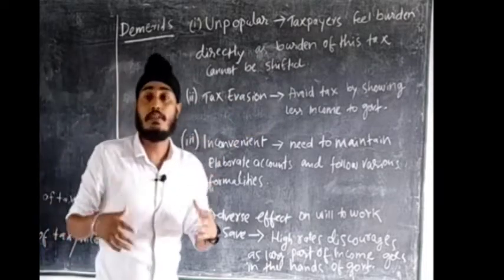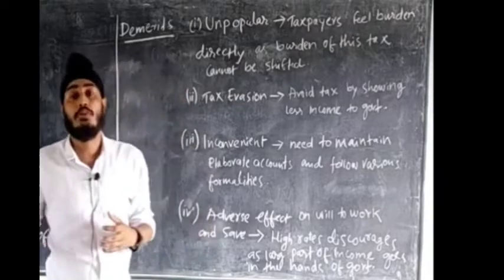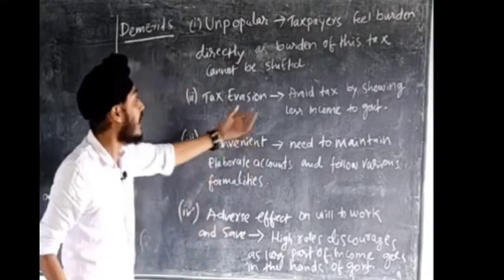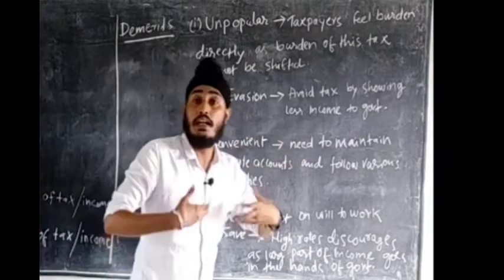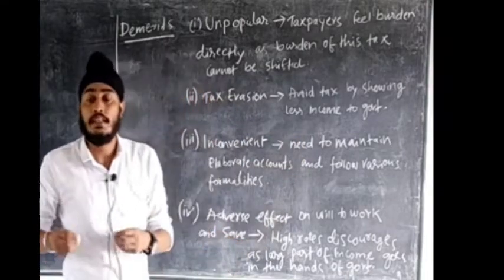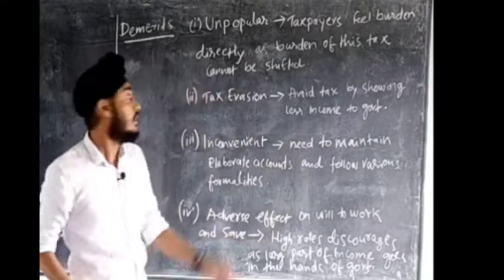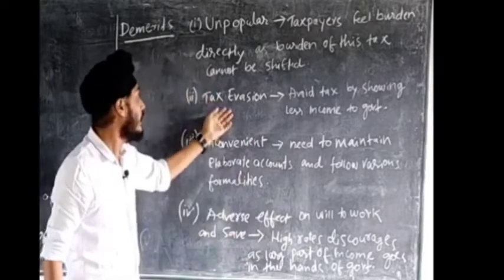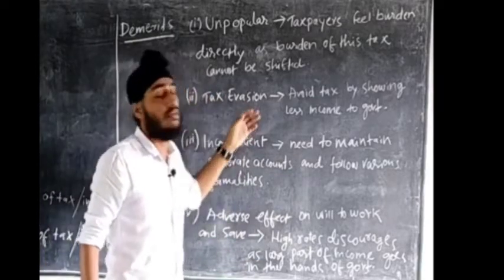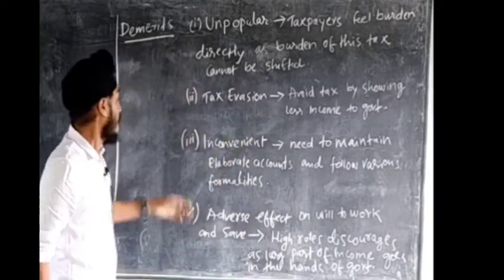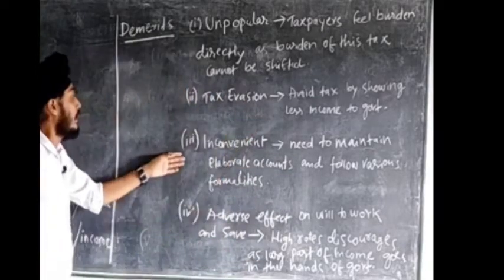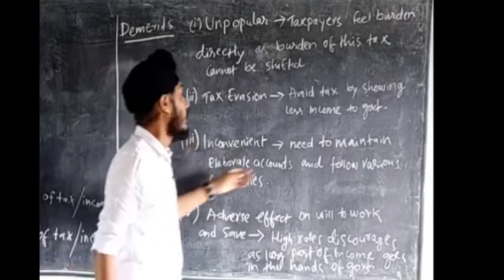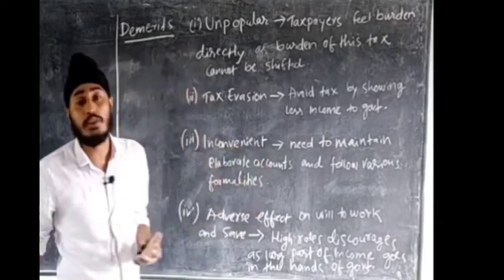The next demerit is tax evasion. Tax evasion means sometimes individuals try to avoid tax by showing less income — if they show less income, they have to pay less tax. This situation is called tax evasion and it is an illegal or criminal offense.